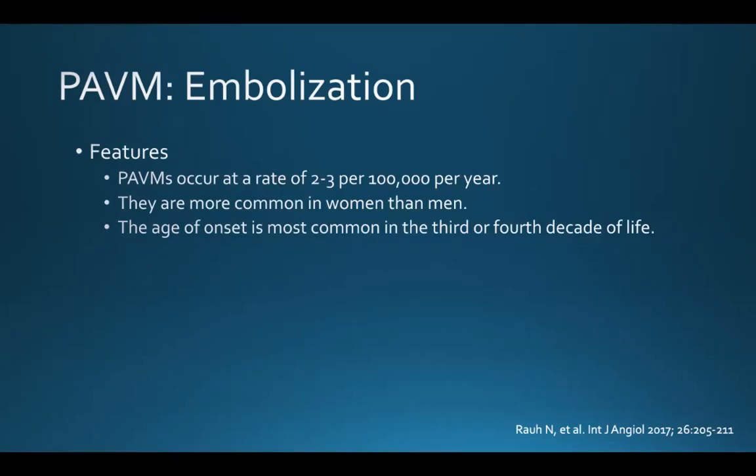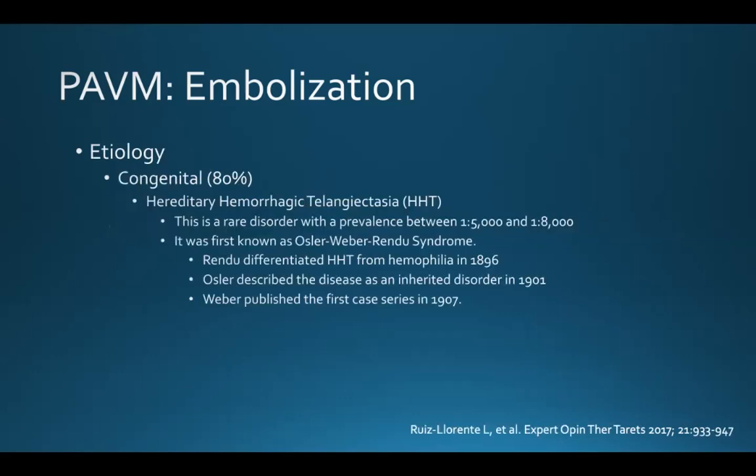PAVMs are rare, and they occur at a rate of 2 to 3 per 100,000 people per year. They're more common in women than men, and the age of onset is most common in the third and fourth decade of life. Most of these are congenital, and they occur in association with HHT, or hereditary hemorrhagic telangiectasia.